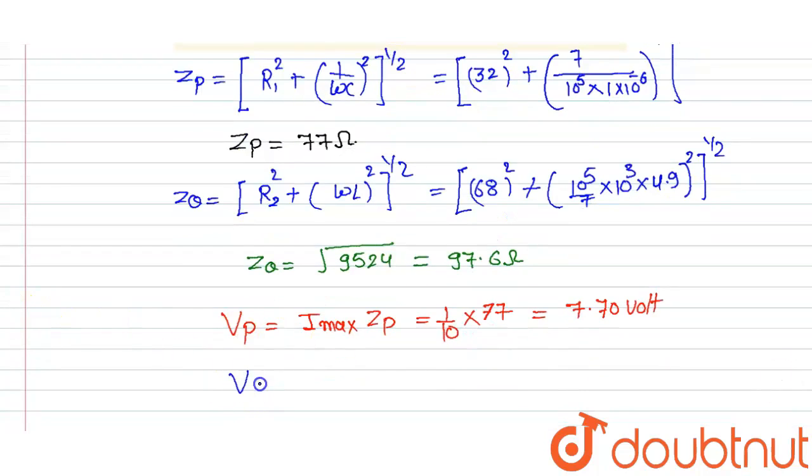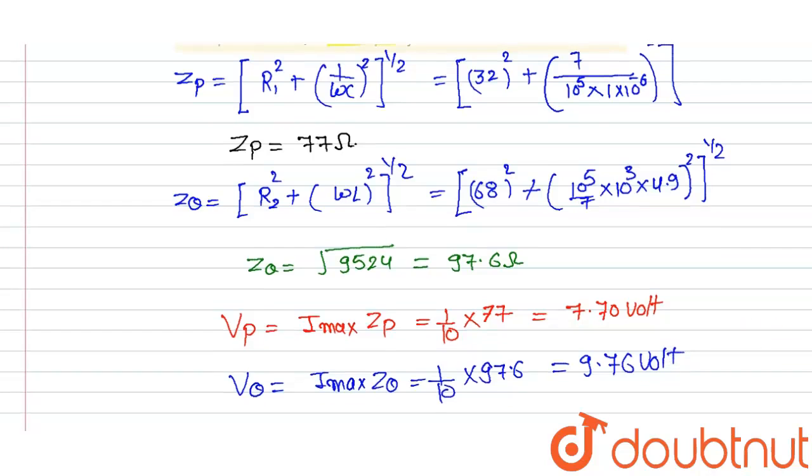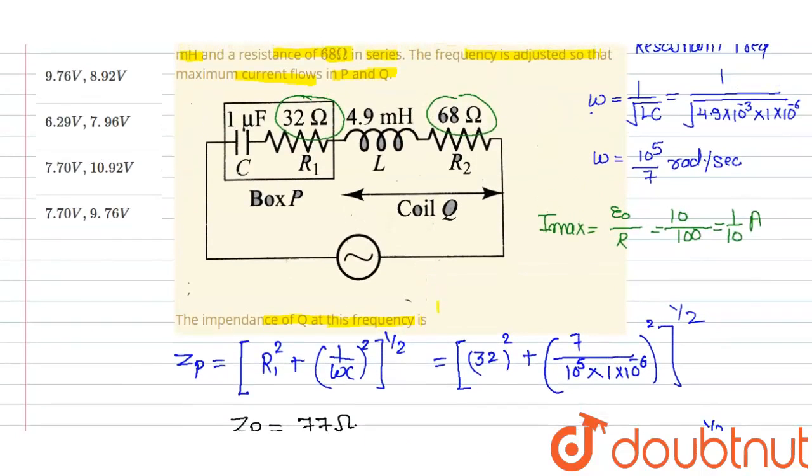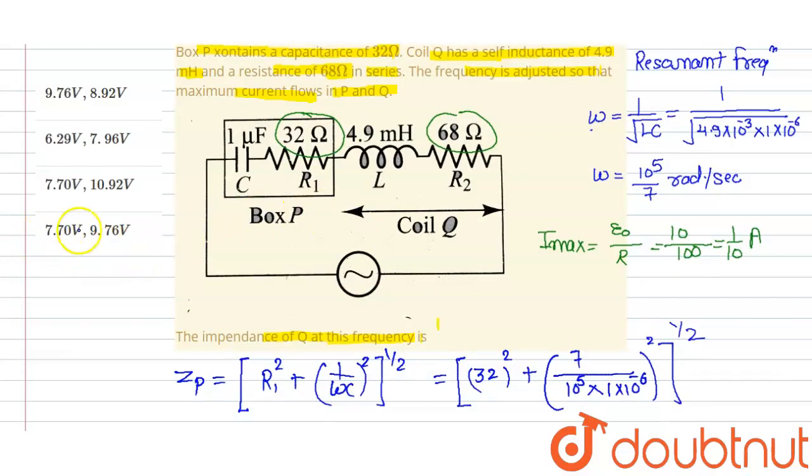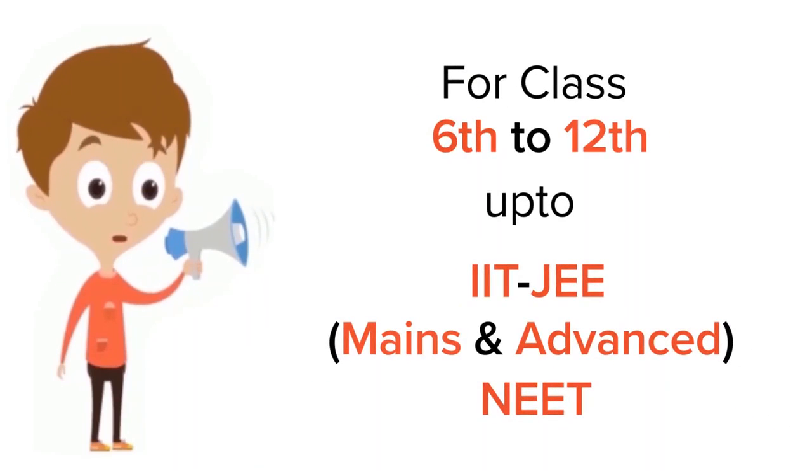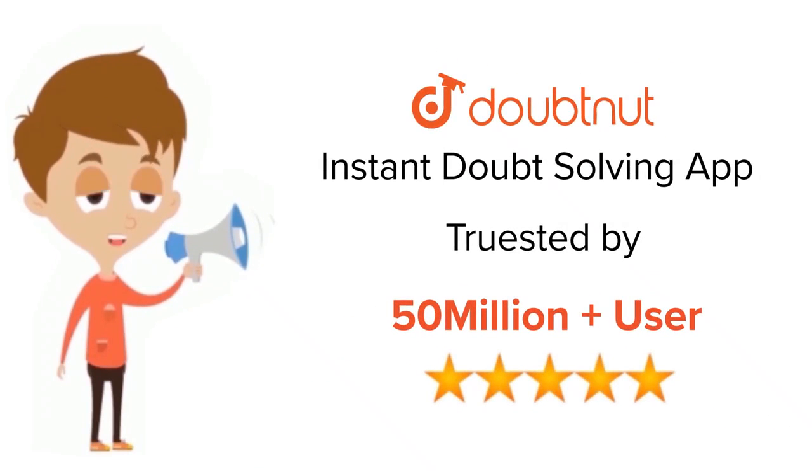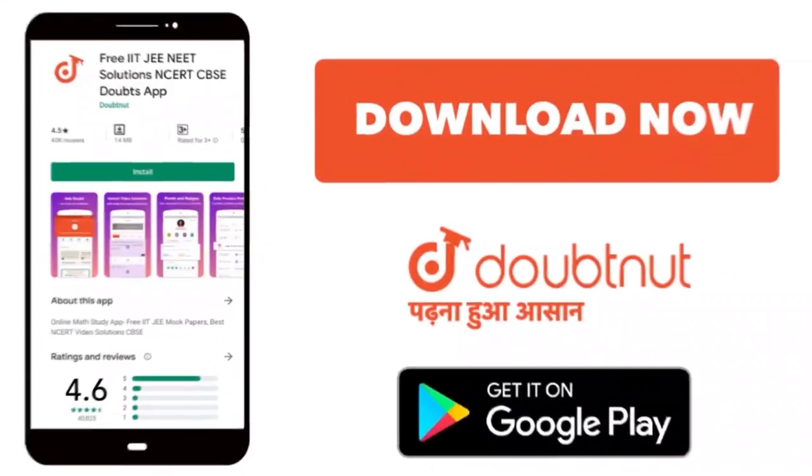Similarly, we calculate for Q box, which is equivalent to I maximum multiplied by ZQ, that is 1 upon 10 multiplied by 97.6, which is 9.76 volts. Now we check the options. P and Q are 7.7 volts and 9.76 volts, so option D is correct. Thank you so much. For class 6 to 12, IIT-JEE and NEET level, trusted by more than 5 crore students, download Doubtnut app today.